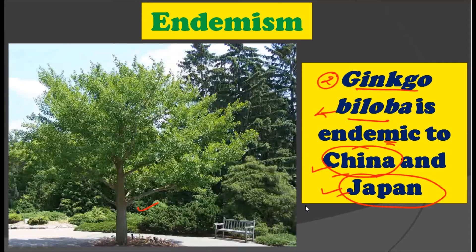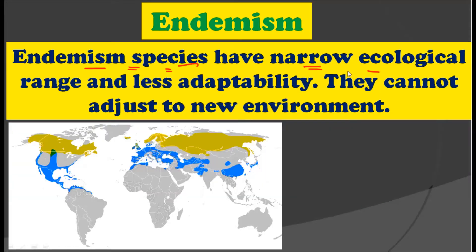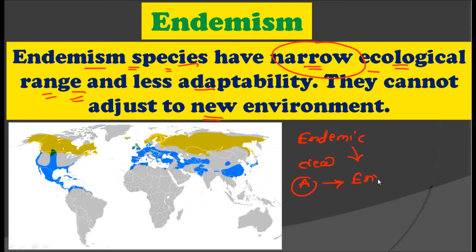Ginkgo biloba is also a living fossil which is endemic to China and Japan. Now, these endemic species have a narrow ecological range and less adaptability — they cannot adjust to a new environment. Any species we say is endemic in nature has a very narrow ecological range, meaning there is a particular environment in which it thrives well, and if that environmental range is not found anywhere else in the world, that species would not grow in other parts of the world. That is why the species becomes endemic, because it has very less adaptability and a very narrow ecological range.